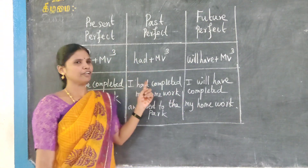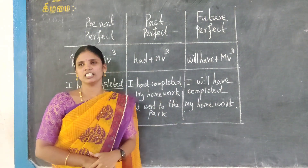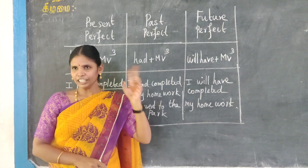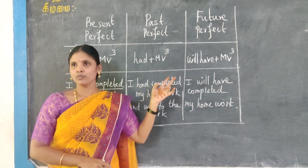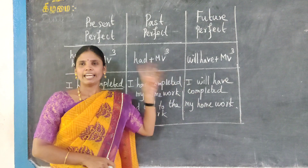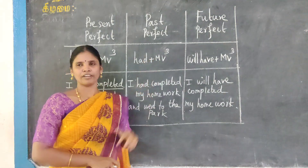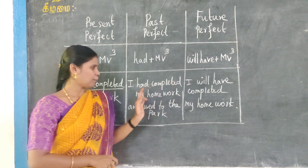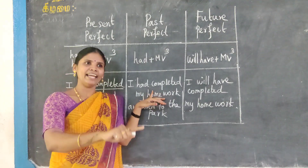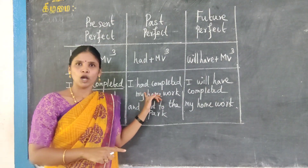Past perfect. This is a past event. If two actions were done in the past, one action will be said in past perfect and the other will be said in simple past tense. The past event that happened earlier will be said in past perfect.